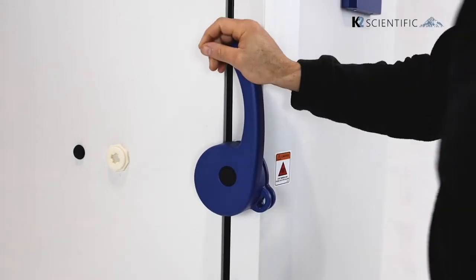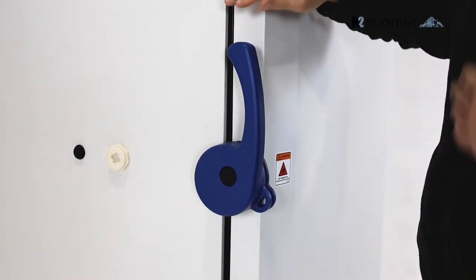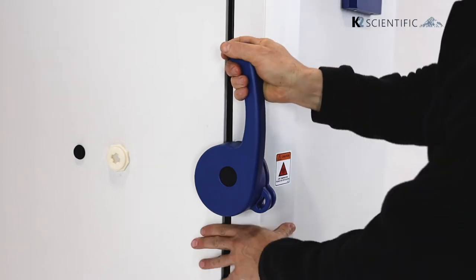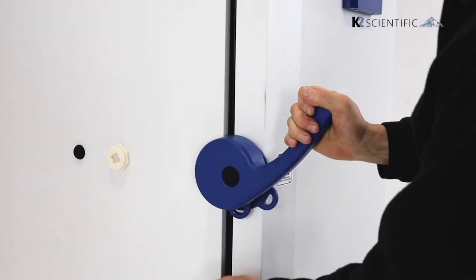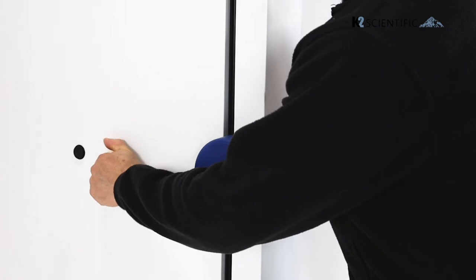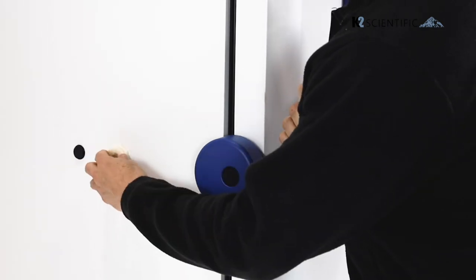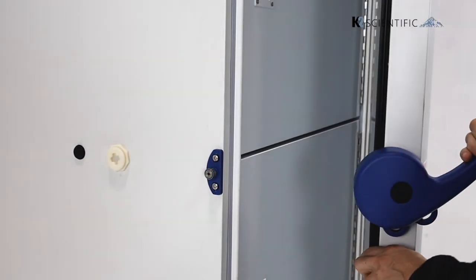Now occasionally, pressure will build up inside the unit that will make it very difficult to open the door. So what you can do is use this release valve on the side to release some of the pressure, then you can open the door.